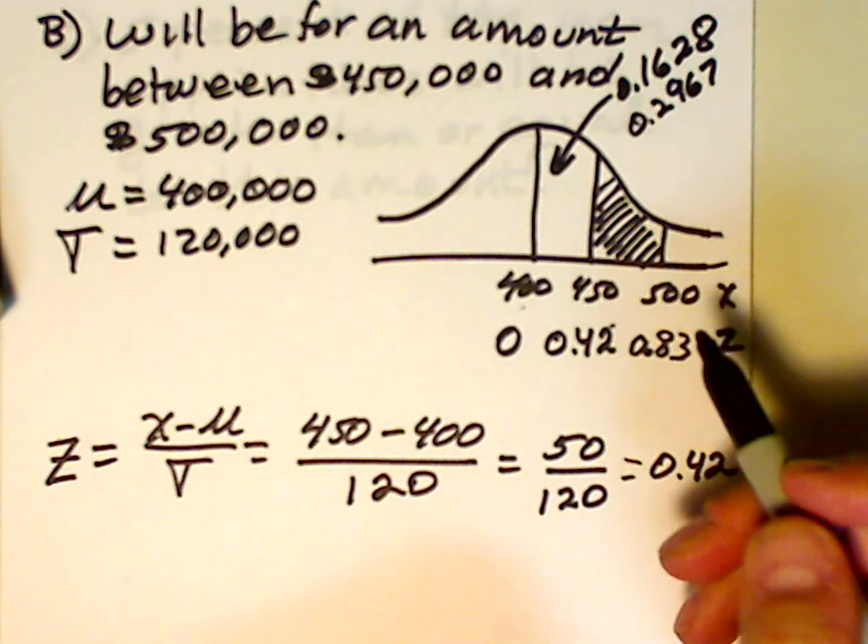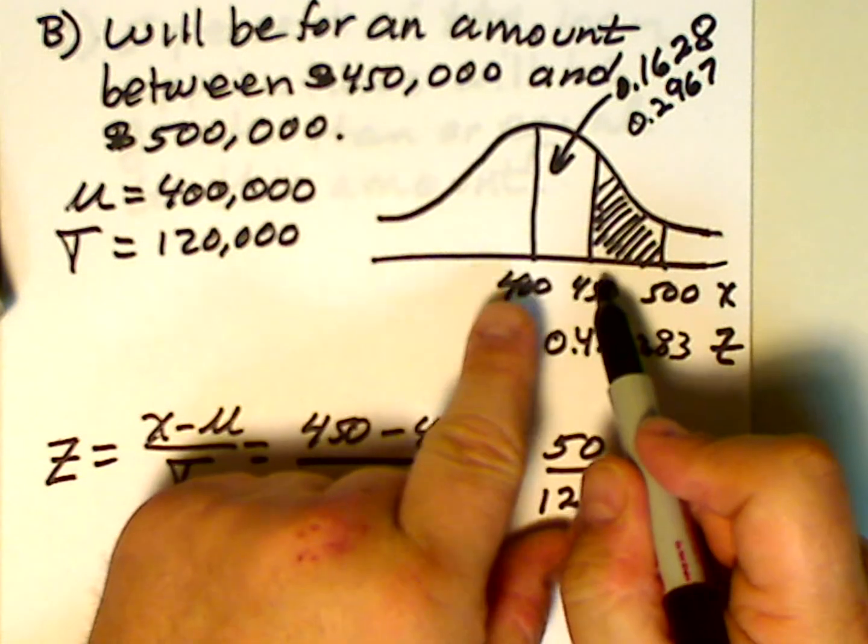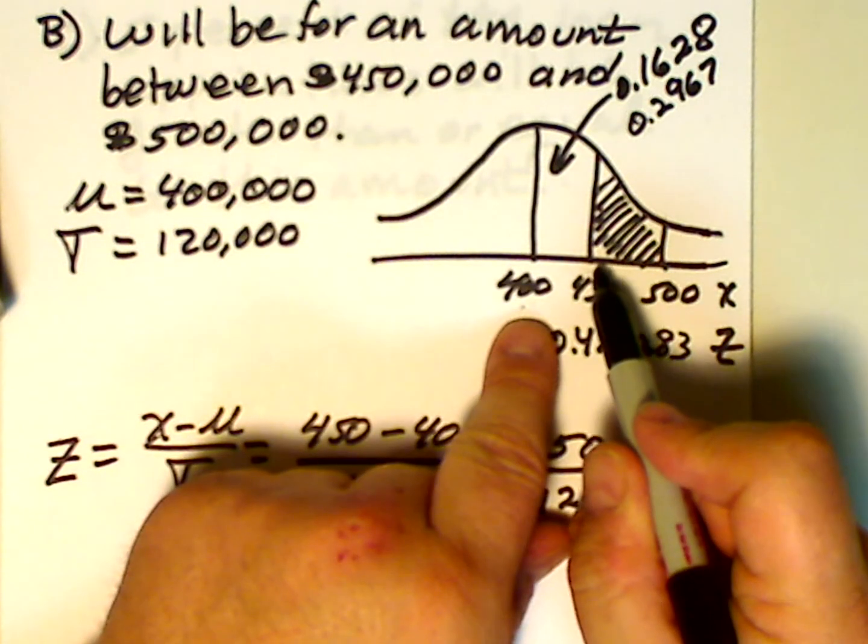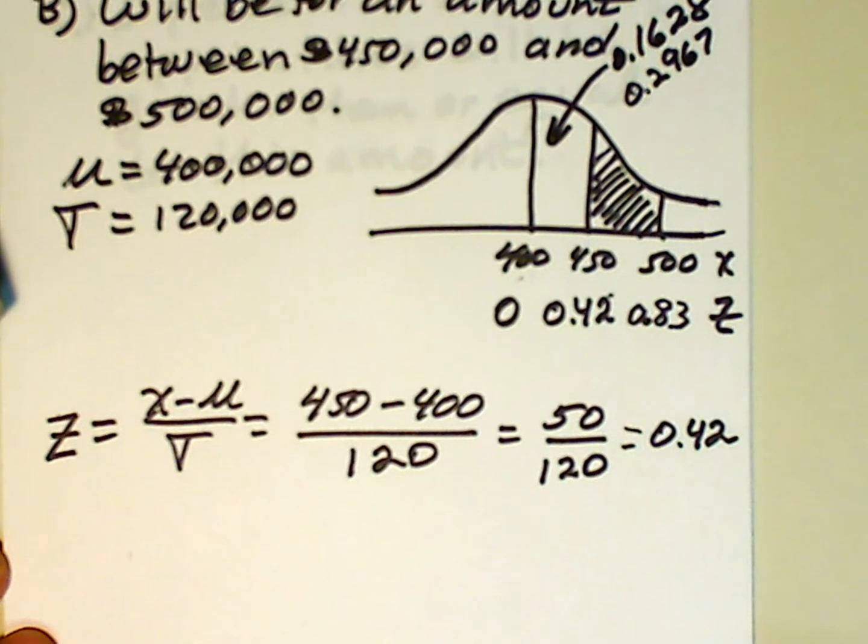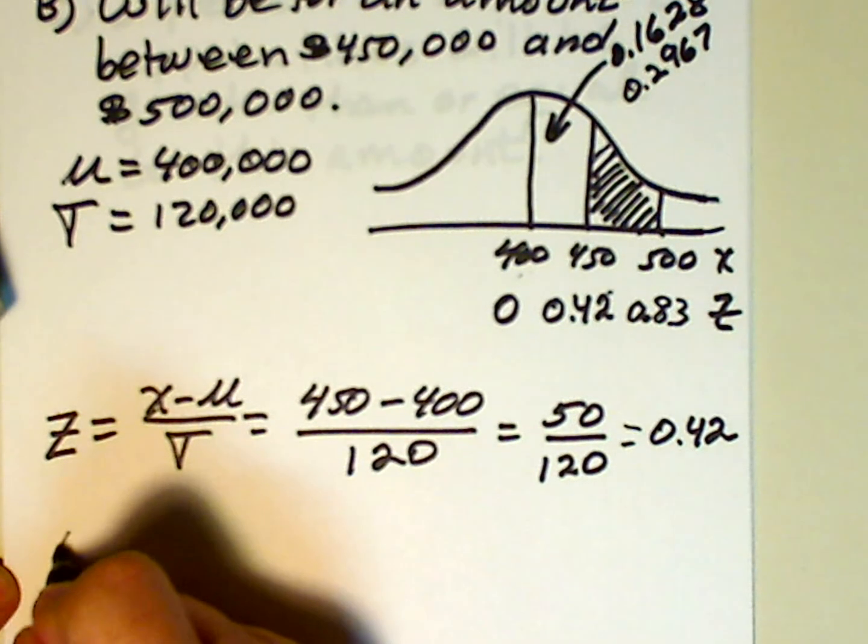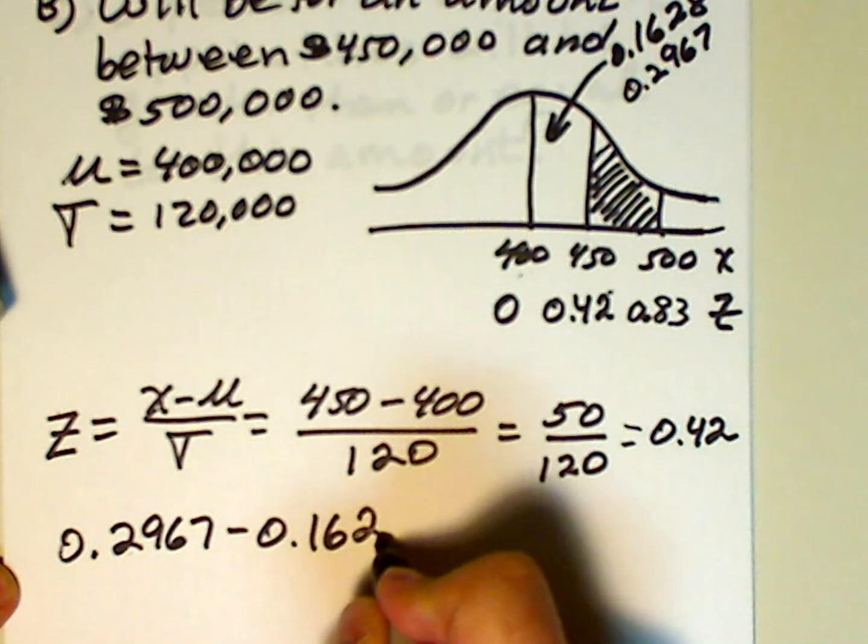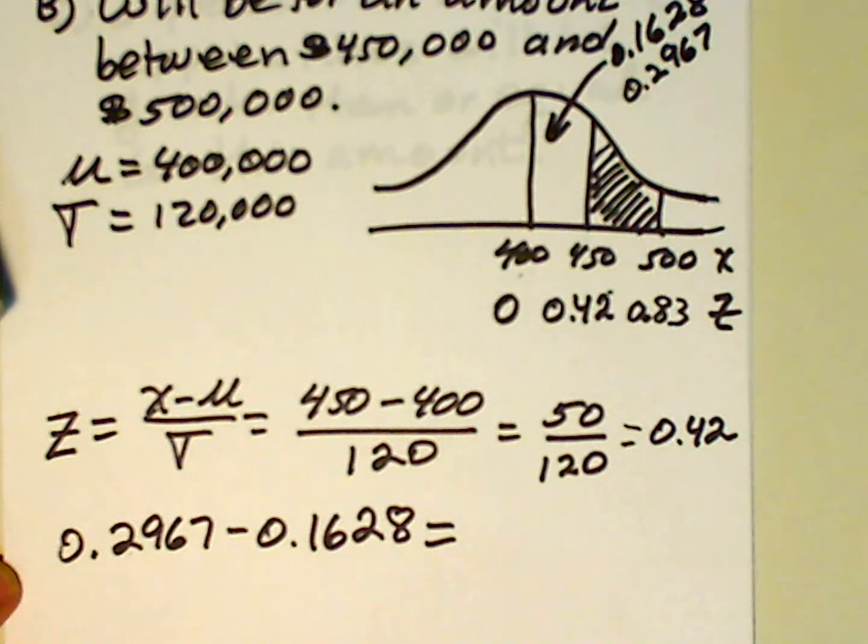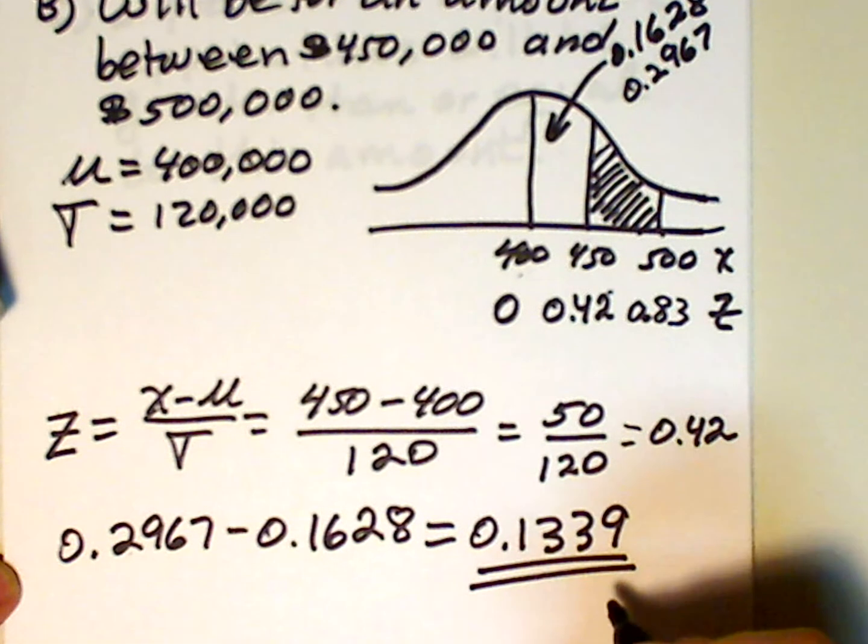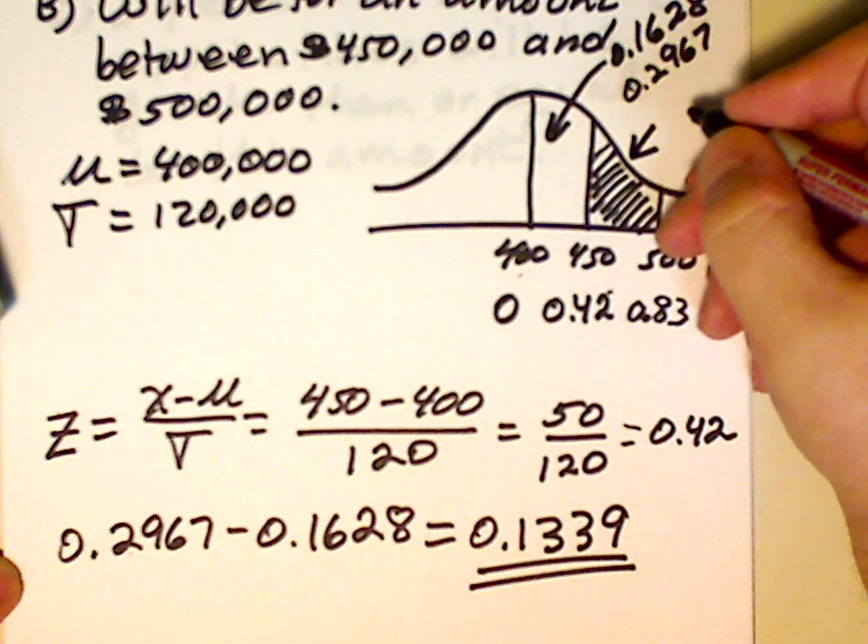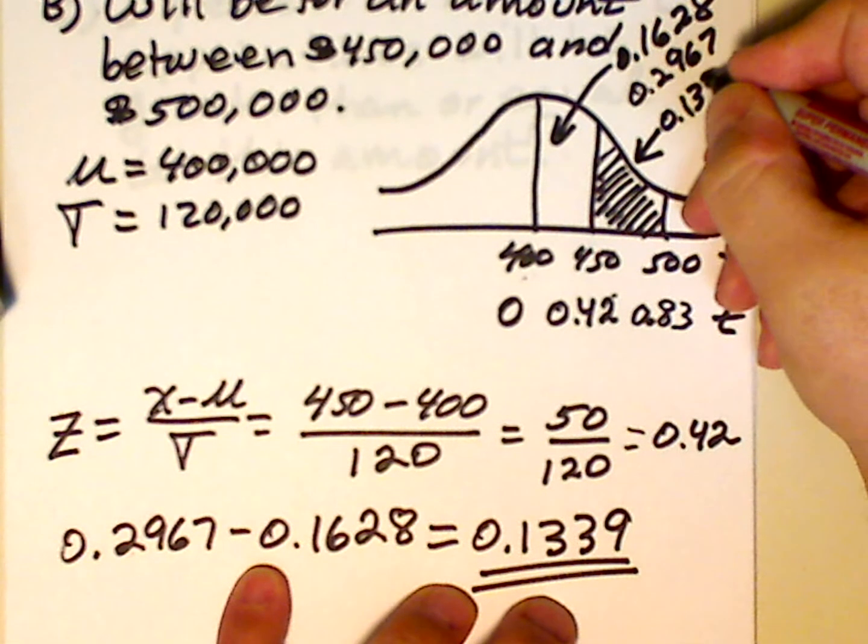So in order to find this area, we're going to take this larger area, 0.2967. And from it, we're going to subtract off this smaller area from 400 to 450, which is 0.1628. So let's do that now. 0.2967 minus 0.1628 is equal to 0.1339. So this area is 0.1339.